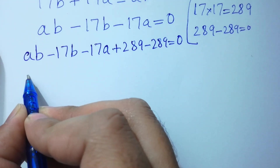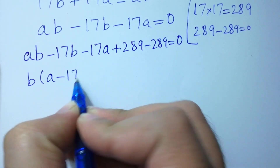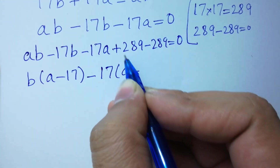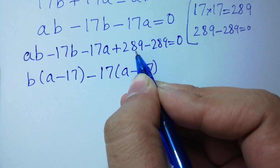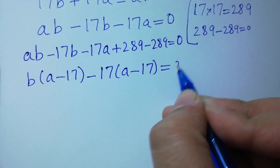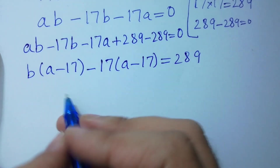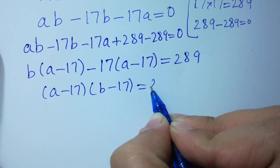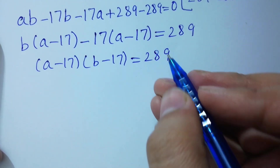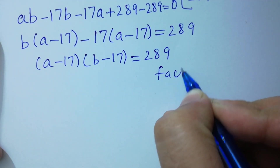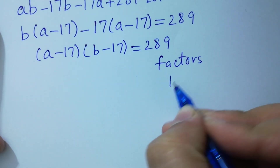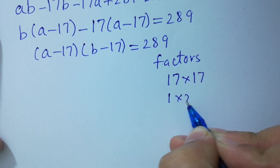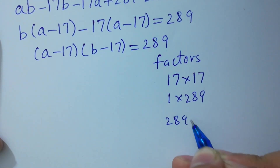Taking b as common and applying factorization: b times (a minus 17) minus 17 times (a minus 17) plus 289 equals 0 plus 289. This gives us (a minus 17)(b minus 17) equals 289. We have factor pairs: 17 times 17, 1 times 289, and 289 times 1.